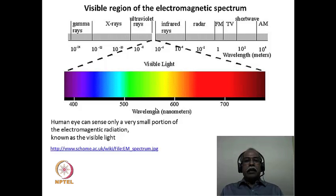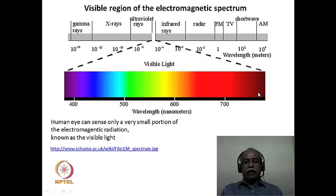In the electromagnetic spectrum, there is a very small portion known as the visible region — the only portion to which the human eye is sensitive. We can perceive only the colors of this region; ultraviolet and infrared are invisible to the human eye. The human eye is sensitive to approximately 380–390 nanometers, which is the violet region, to about 760–780 nanometers, which is the red region. This is important when we discuss UV-visible spectroscopy.